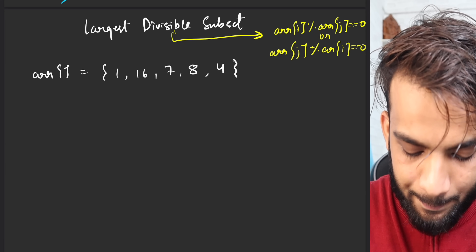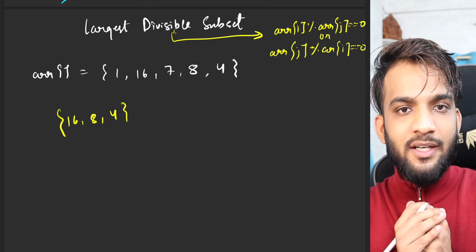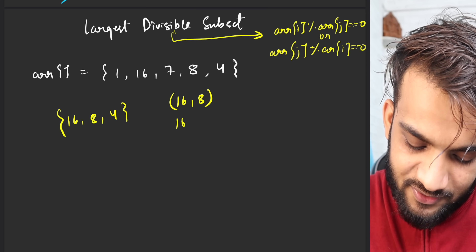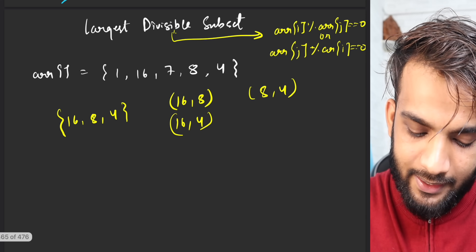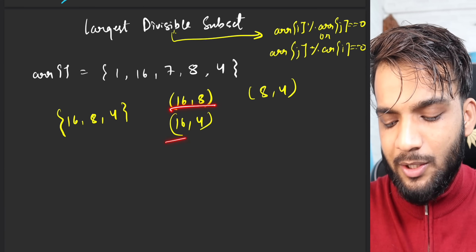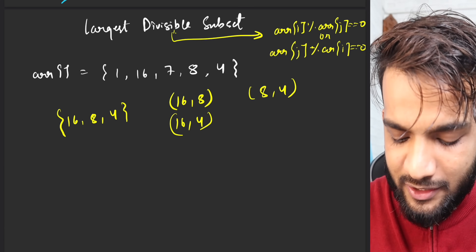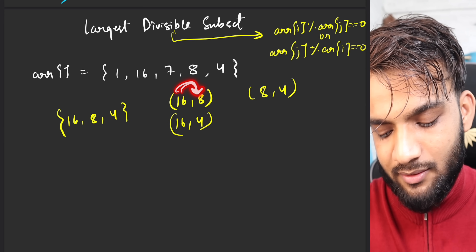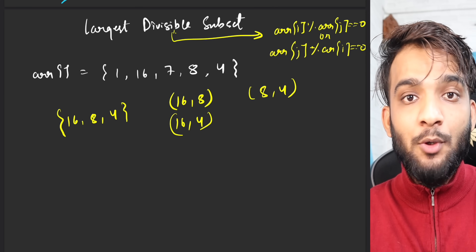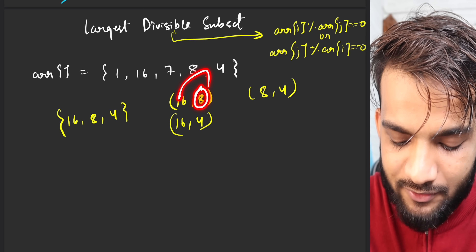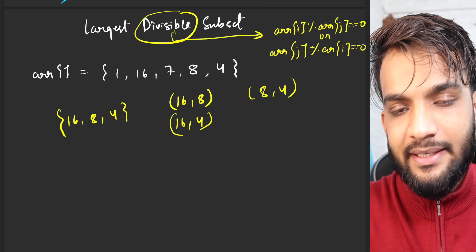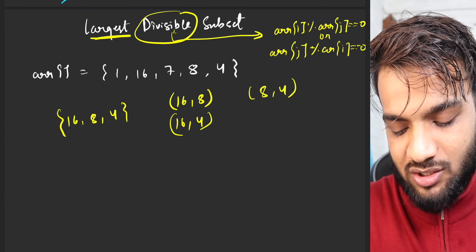For example, if I pick a subset {16, 8, 4}, the possible pairs are: (16,8), (16,4), and (8,4). Now 16 is divisible by 8, 16 is divisible by 4, and 8 is divisible by 4 — so every pair is divisible. I'm not saying 8 has to be divisible by 16; it can be either way. That is the meaning of divisibility.